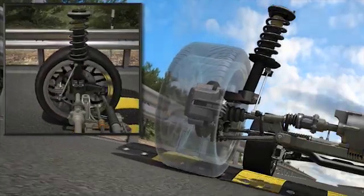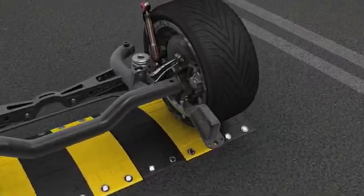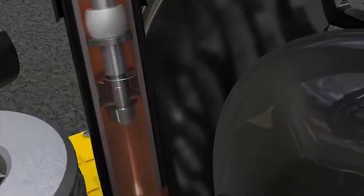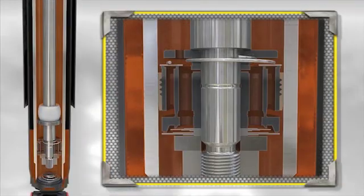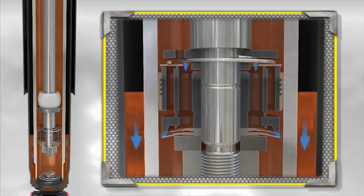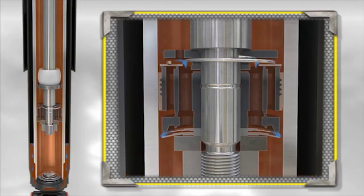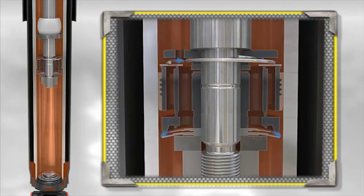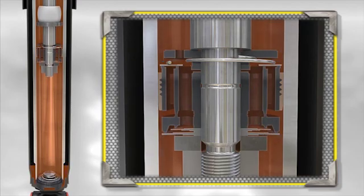During the rebound movement, the piston rod leaves the working chamber in a controlled manner due to the effect of the rebound valve. This movement creates a vacuum, which causes oil suction from the reserve chamber, which is equivalent to the volume of the piston rod having left the working chamber during the rebound movement. Thanks to this effect, the working chamber is constantly full of oil.